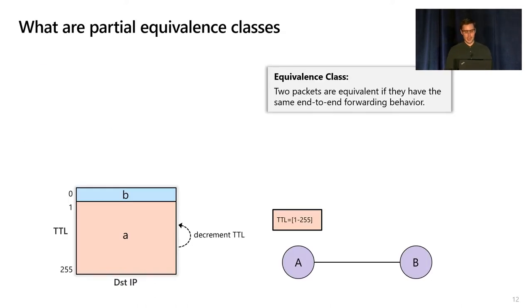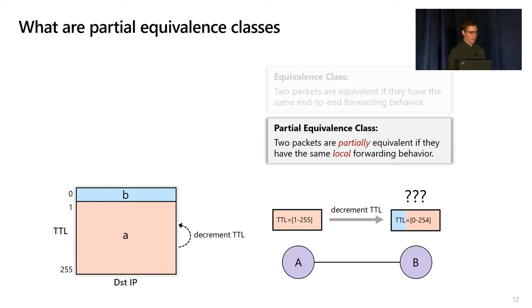The idea of partial equivalence classes is actually pretty simple. Rather than requiring that packets have the same end-to-end forwarding behavior, they now only have to have the same local forwarding behavior. For example, going back to our TTL example, we now only have two partial equivalence classes, one where the TTL is zero and one where it's greater than zero. Let's say that all the packets with TTL greater than zero have the same next hop of B from A. We apply the decrement operation and get a new set of TTL values, which is now between zero and 254.